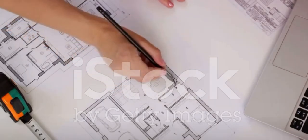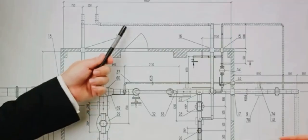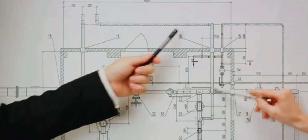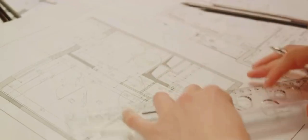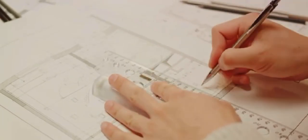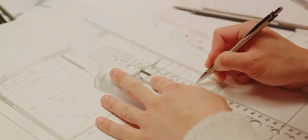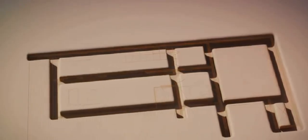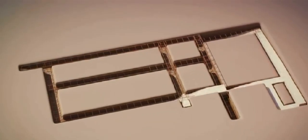It all starts with an idea, a vision. This could be something as straightforward as a family home or as complex as a multi-story skyscraper. The architect takes this idea and begins to develop a concept, a rough sketch of what the building could look like. This concept is the foundation of the design, the seed from which the building will grow.